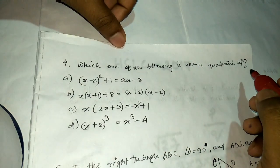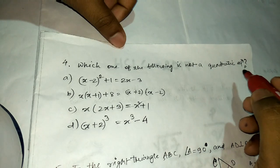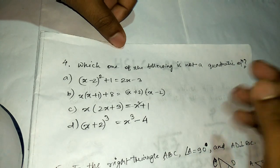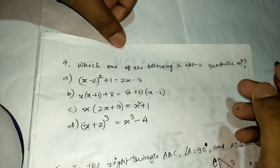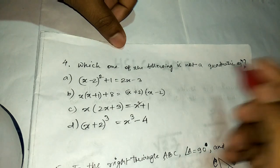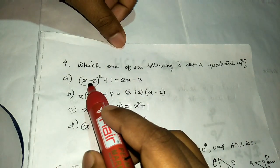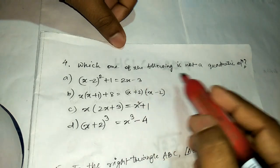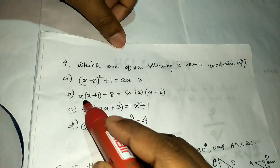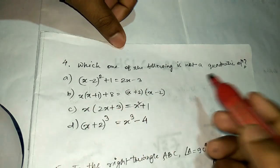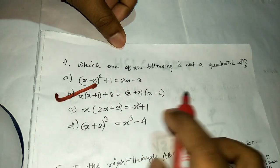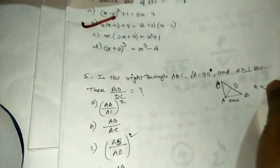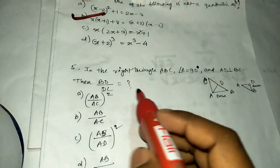Question number four: which one of the following is not a quadratic equation? The standard form is ax² + bx + c = 0 where a ≠ 0. Check each option for the presence of x². The option where x² cancels out — x × x² on both sides cancel — is the answer, as no x² term remains.